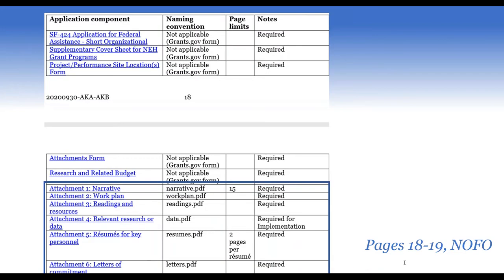Pages 18 to 19 of the NOFO show how different components need to be included in your Grants.gov submission. Upload these as PDFs with the exact file names given — that's really important — observing the page limits indicated. The blue hyperlinks in the NOFO take you directly to the instructions for each section. Don't overdo it — five well-curated pages summarizing your planning process are more valuable than a 50-page report that reviewers have to wade through.